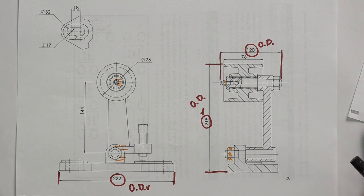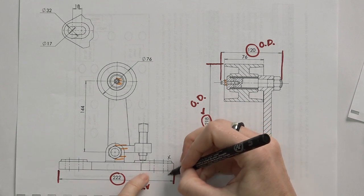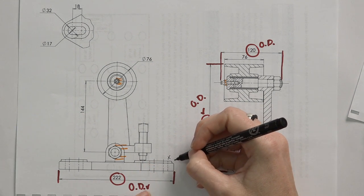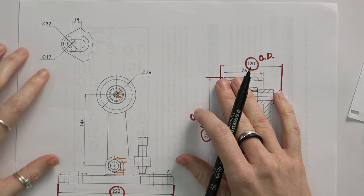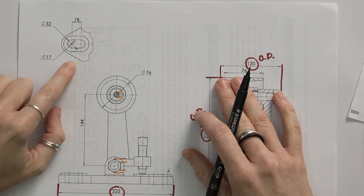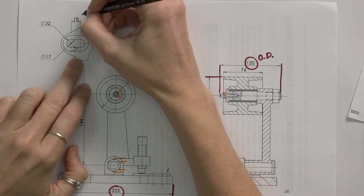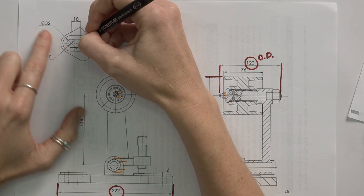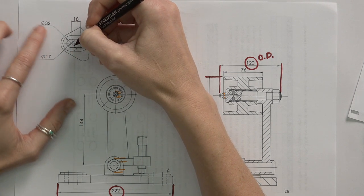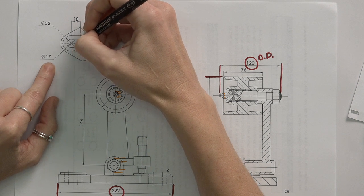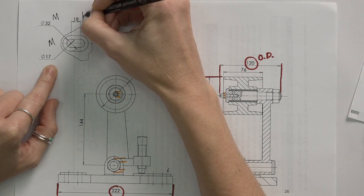So if you remember from your dimension tutorial, we are never allowed to dimension between hidden detail. So because this is a hidden hole, we can't dimension actually on this view, which is why in this case they drew a small little partial view of just this part of the component. So here I can say the distance between these holes are 18, the diameter of the outside hole, so how big the top of the bolt or the screw can be is 32, and the inside is 17. So these three dimensions are my mounting dimensions.